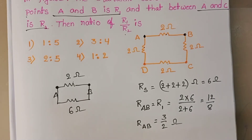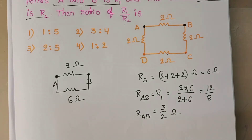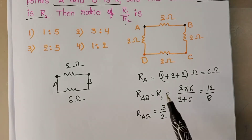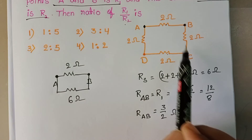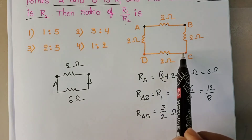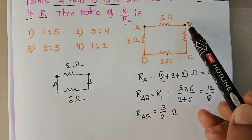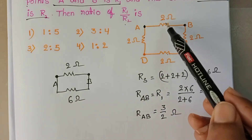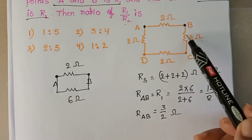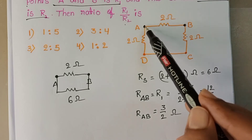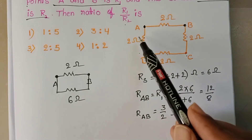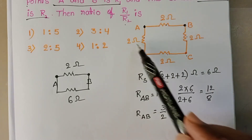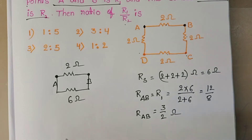Next, we find the equivalent resistance between points A and C. On one side, two 2 ohm resistors are connected between A and C, and on the other side also two 2 ohm resistors are connected.